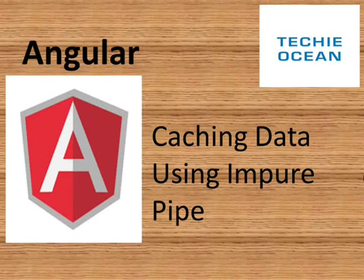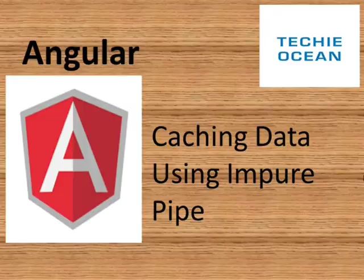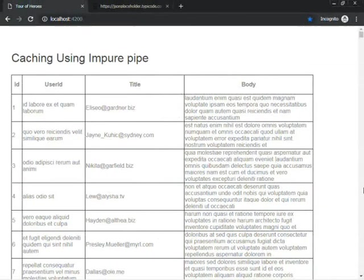Hi guys, welcome to TechieOcean. In this tutorial we'll see how to cache data using an impure pipe. We have a very simple example in which we are calling a GET API and simply populating the fields in a grid.